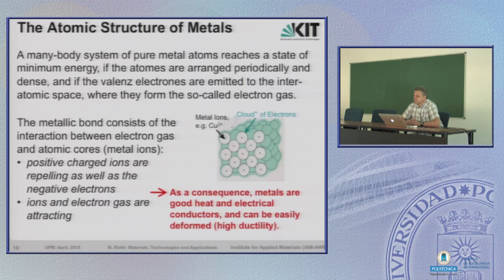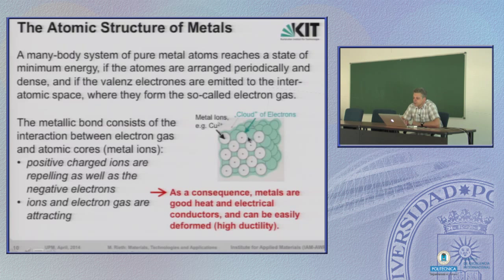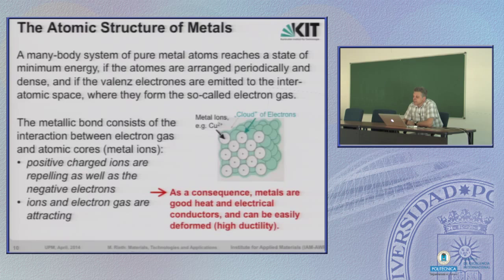The atomic structure of metals is a result of a many-body system. In pure metals, the atoms reach a state of minimum energy if they are arranged periodically and as dense as possible. The simple picture is that the single ions move in a general sea of electrons. The positive charged ions repel each other, as do the negative electrons, while ion and electron gases attract. As a consequence, metals are good heat and electrical conductors, and metals are highly ductile because atoms can be easily shifted.